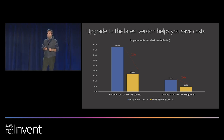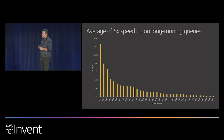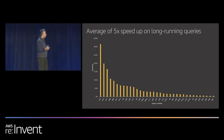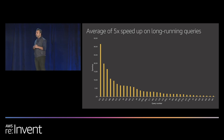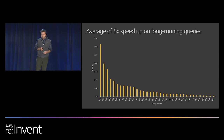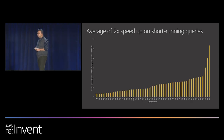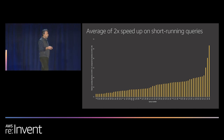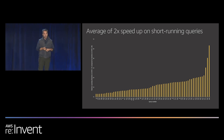Let's dig into what's happening. If I take a cross-section of long-running queries — meaning queries that run north of 90 seconds or more — we see roughly about 5x improvement. This graph shows the TPC-DS queries, with the y-axis showing average speedup compared to the open-source version without the runtime. We also see about 2x improvement in short-running queries — those running on 3 terabytes of data but completing in less than 90 seconds.